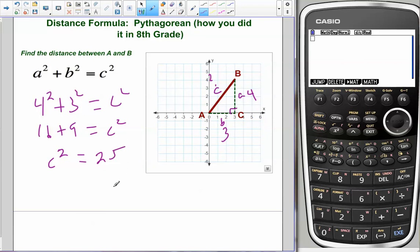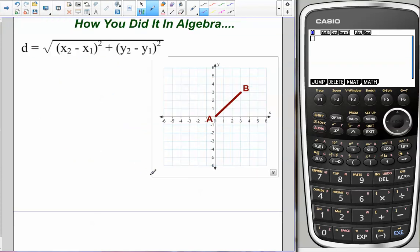We take the positive root of 25, we don't deal in negative distances, so C equals 5. That's what you did in math 8. So let's take a look at what you did in algebra. They introduced the distance formula in algebra. It is just a form of A squared plus B squared equals C squared, they just took the square root of C squared before you got started.